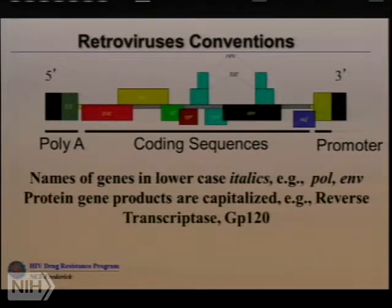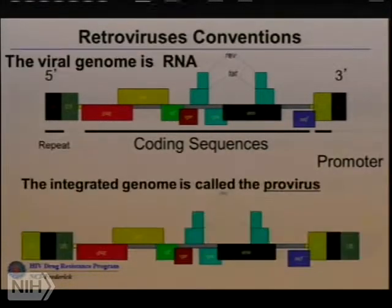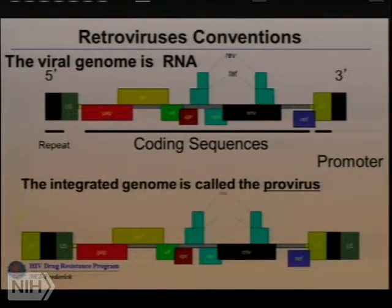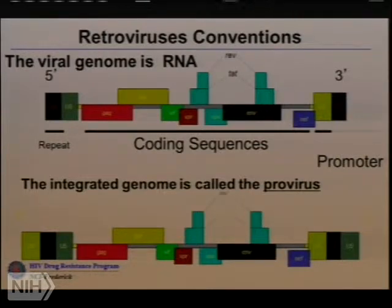By convention, the names of the genes are in lowercase and the protein gene products are capitalized, so it's definitely not random when you read papers. Once the virus gets inside the cell, it has to integrate into the genome, and now there's a complete long terminal repeat — U3RU5, U3RU5. Somewhere between the virion RNA and the integrated provirus, it has rearranged its genetic material such that the promoter is now at the 5' end and the poly-A sequence is at the 3' end.